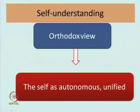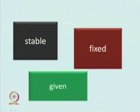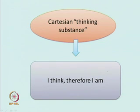The orthodox view of self-understanding was a view of the self as autonomous and unified — something completely autonomous with its own agency, always unified, stable, fixed, and given. The Cartesian 'I think therefore I am' — Rene Descartes' thinking substance — is an exemplary way of this older way of looking at the self as autonomous. The phrase 'I think therefore I am' gives an illusion of autonomy of the self, an illusion that you are in complete control of yourself.